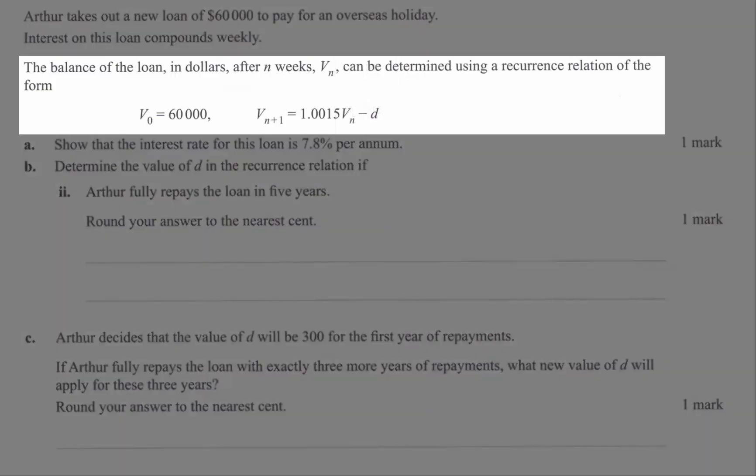Well let's have another look at the question. The question says that the balance is being modeled by this recurrence relation. It's not possible to have a loan modeled by a recurrence relation with D to more than two decimal places because how is someone going to pay off a loan with three or four decimal places of dollars. Not actually possible.